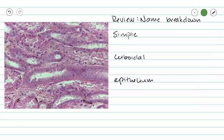So let's take a look at our name, simple cuboidal epithelium. What does it mean if we're looking at a simple epithelium? Remember, a simple epithelium is only one layer of cells, whereas a stratified epithelium contains multiple layers of cells.